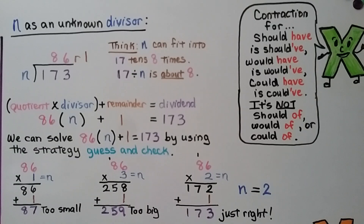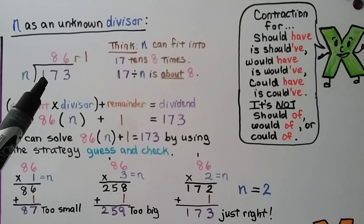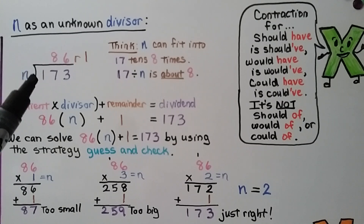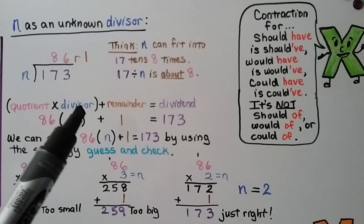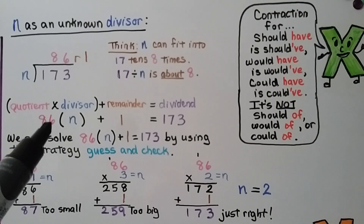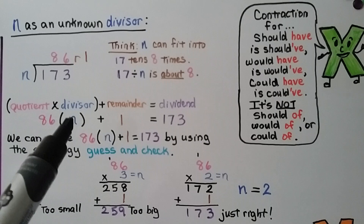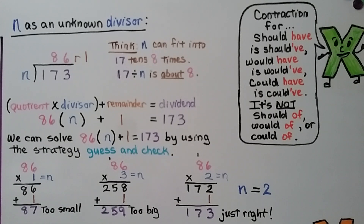If n is an unknown divisor, we have 173 divided by n equals 86 remainder 1. We know the quotient times the divisor, plus the remainder, should equal the dividend: 86 times n, plus 1, equals 173. We can use guess and check. Trying n equals 1: 86 times 1 is 86, plus 1 remainder is 87 — too small. Trying n equals 3: 86 times 3 is 258, plus 1 is 259 — too big.